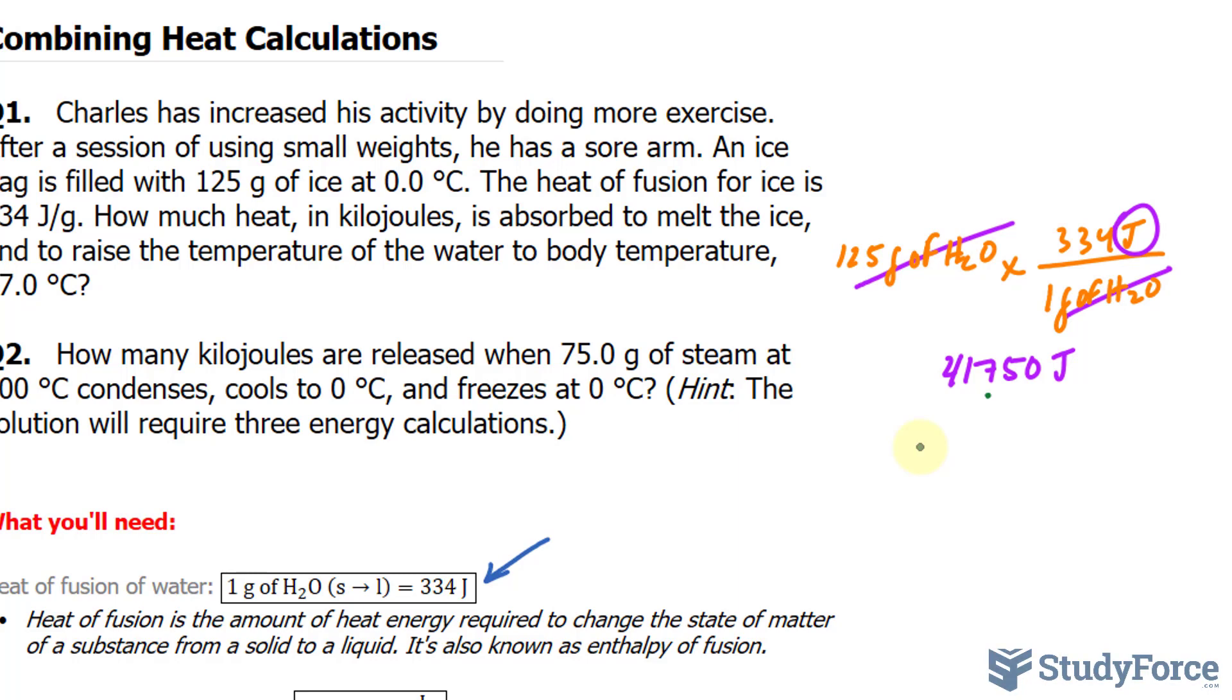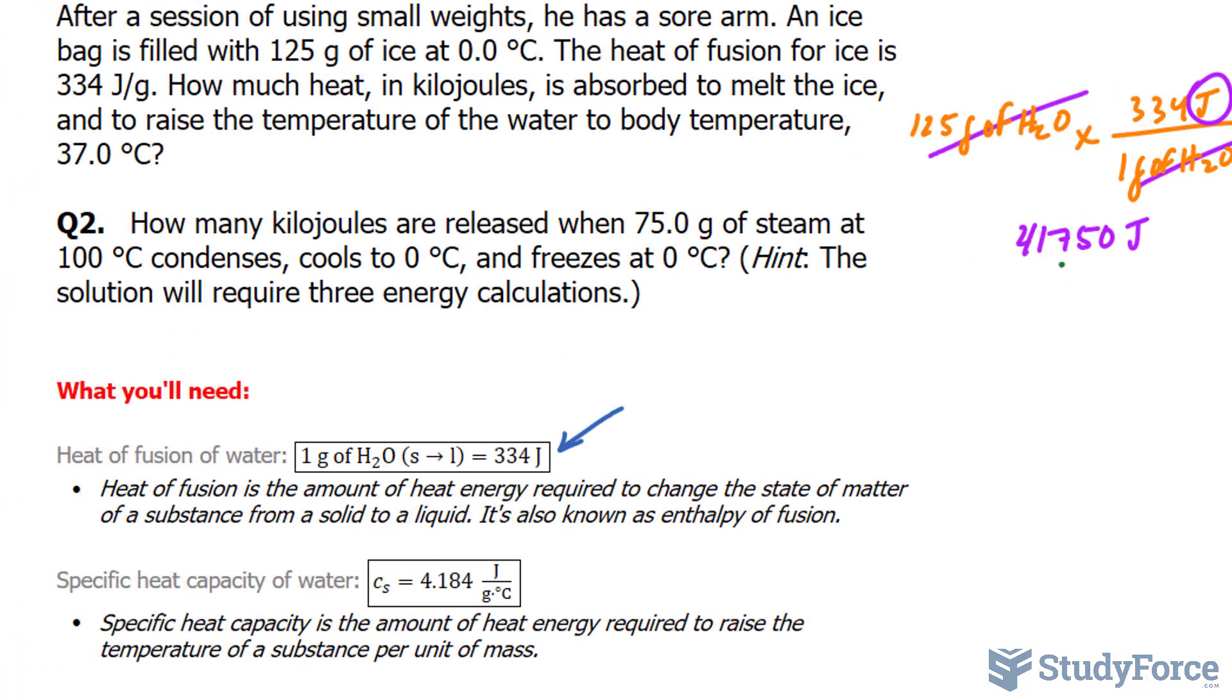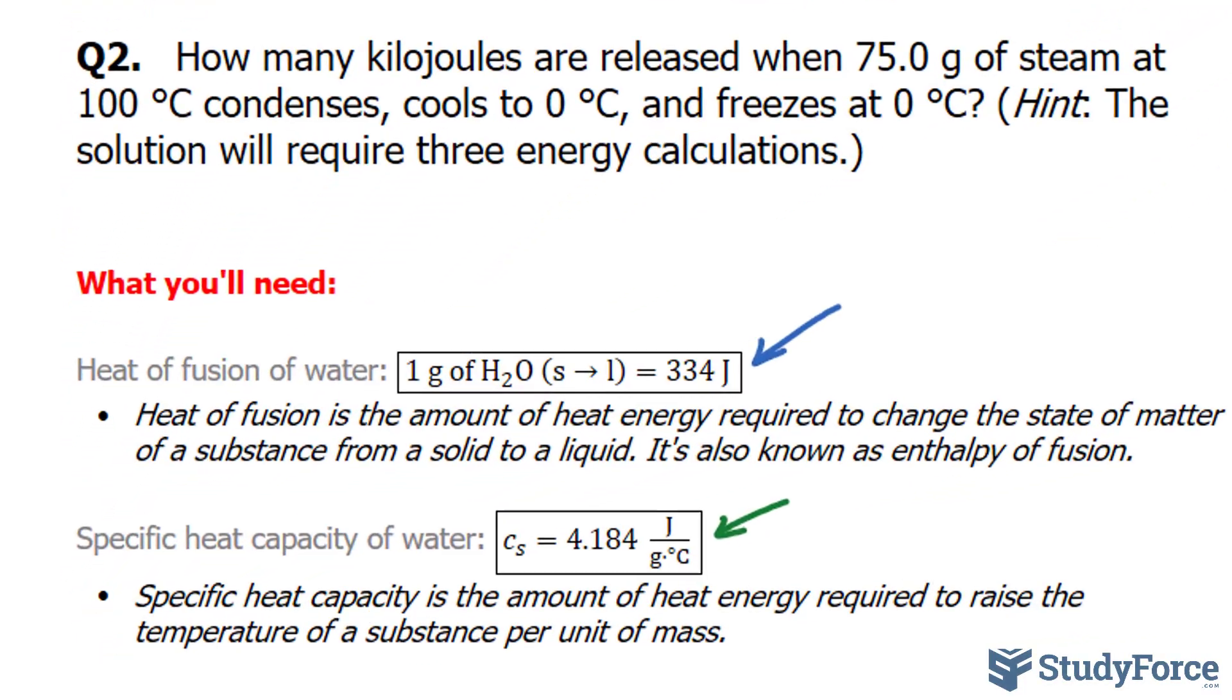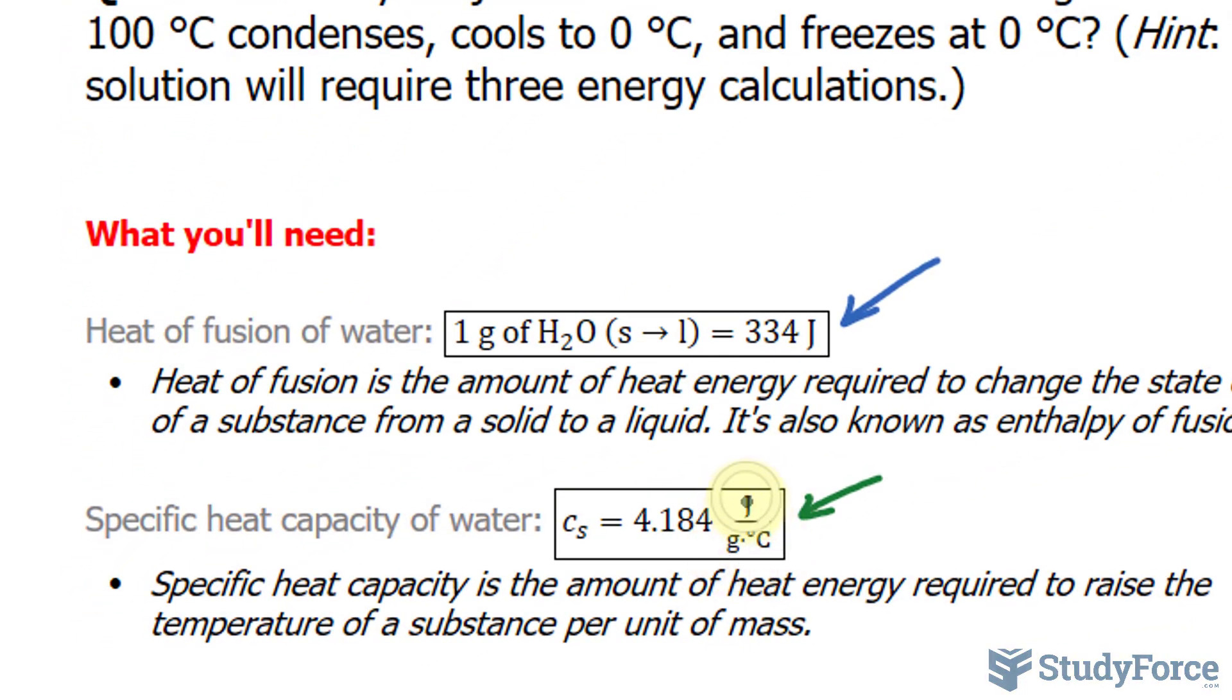So that's the amount of joules required to go from solid to liquid. Now we want to know how much energy is required to raise this to 37.0 degrees Celsius. For that, we'll be using the specific heat capacity of water, this number. And if you don't know, specific heat capacity is the amount of heat energy required to raise the temperature of a substance per unit of mass.